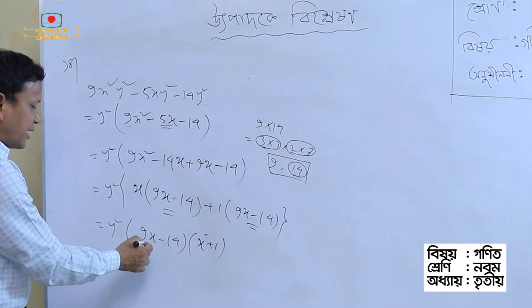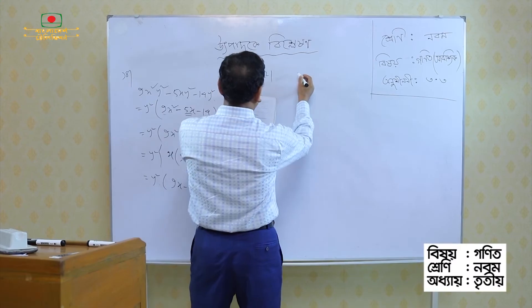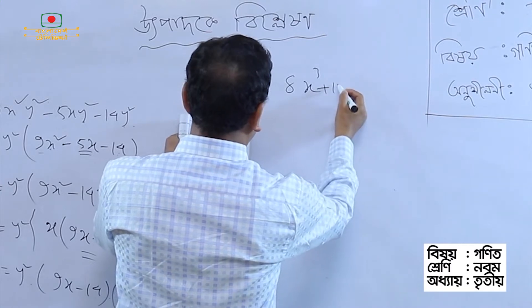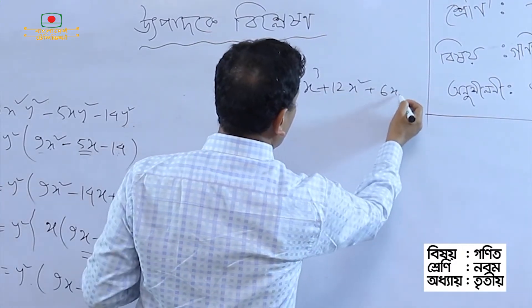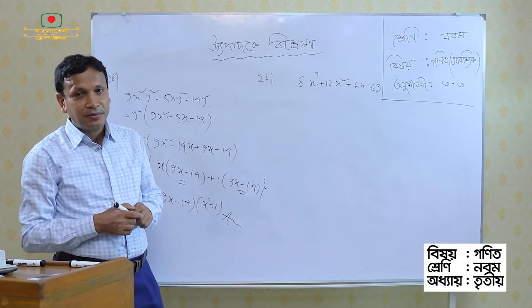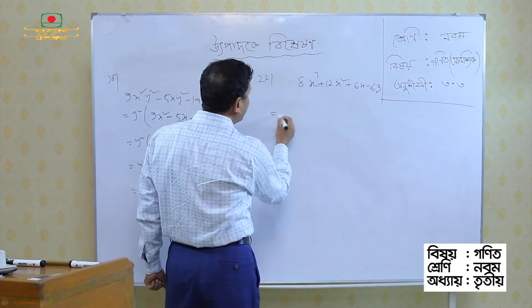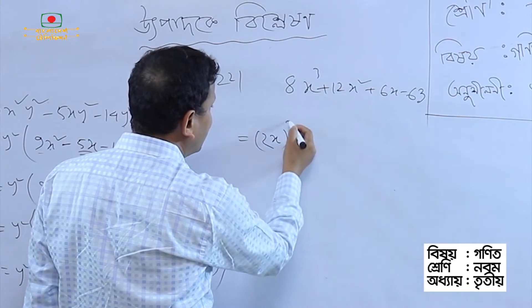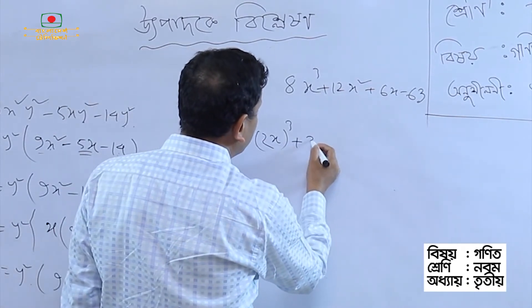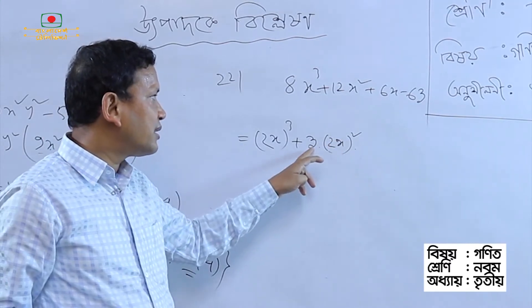3 common gives us 9x minus 14, times x plus 1. And the y squared factor into 9x minus 14 times x plus 1. So we have learned this now.